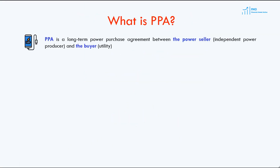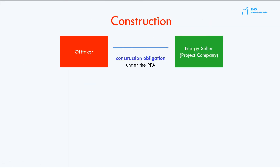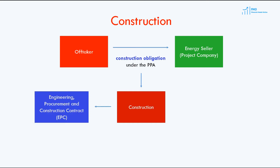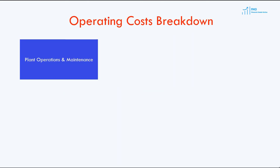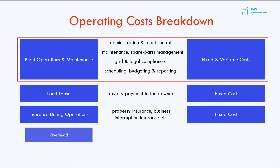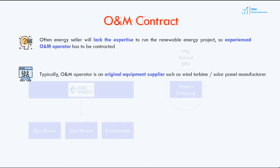Next, we will look at how the energy generated by wind and solar plants is sold. We will then review the major construction contracts used in wind and solar power plant development, and we will spend some time on the operations and maintenance contract to see how such contracts benefit the project.